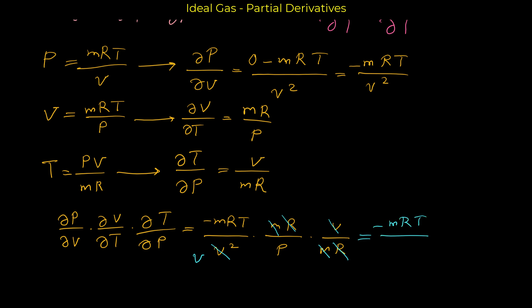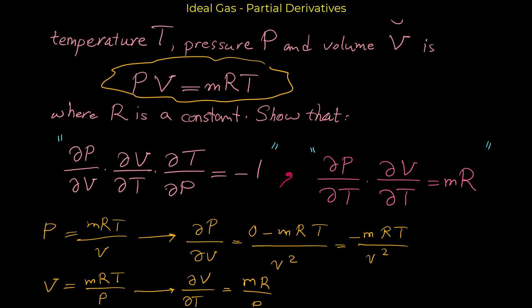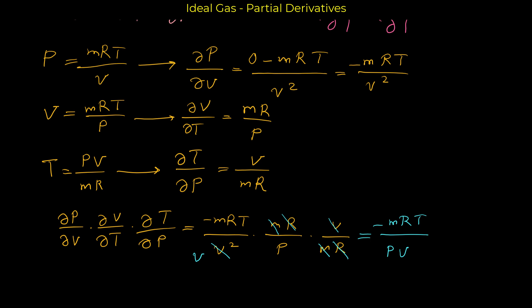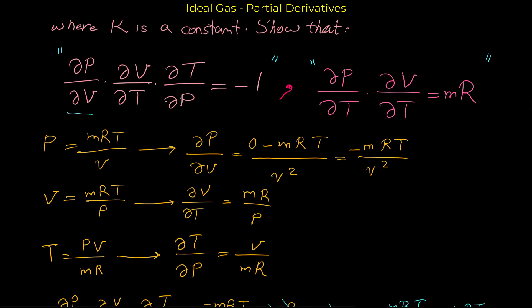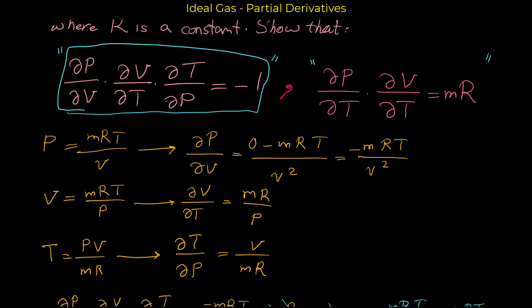So we get negative mRT over pv. You might think: how can this equal negative one if we have mRT on top and pv on the bottom? But in this type of problem you sometimes have to use the given equation to simplify. From the given equation PV = mRT, we know pv equals mRT. So replacing pv in the denominator with mRT, we get negative mRT over mRT, which cancels to negative one. We've shown that the relation holds.